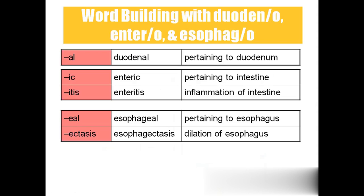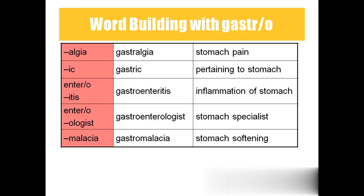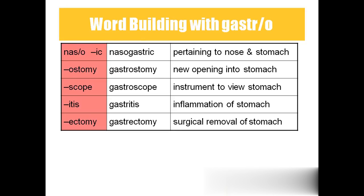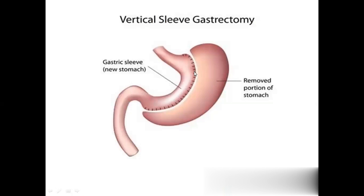Tonsils: pharyngeal tonsils are near the pharynx, palatine tonsils are near the palate, and lingual tonsils are on the tongue. More terms: duodenal — pertaining to duodenum; enteric — pertaining to the intestine; enteritis — inflammation of the intestine; esophageal — pertaining to esophagus; esophagectasis — dilation of the esophagus; gastralgia — stomach pain; gastric — pertaining to stomach; gastroenteritis — inflammation of the stomach; gastroenterologist — stomach specialist; gastromalacia — stomach softening; nasogastric — pertaining to nose and stomach; gastrostomy — creating a new opening in the stomach; gastroscope — instrument to view inside the stomach; gastritis — inflammation of the stomach; gastrectomy — surgical removal of the stomach, often done for obesity to reduce stomach capacity.